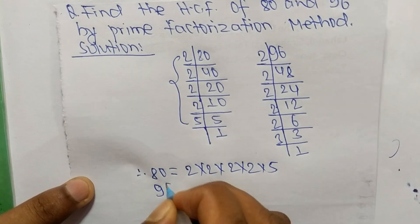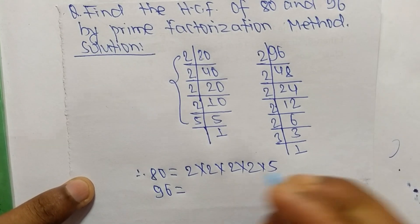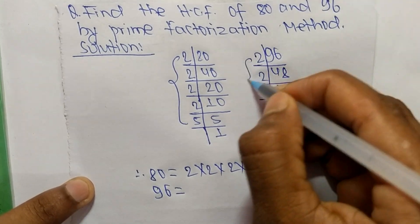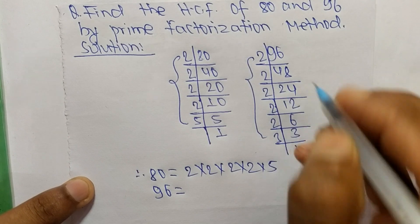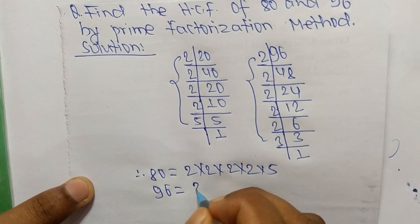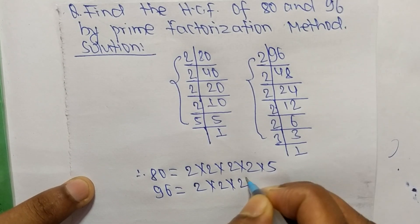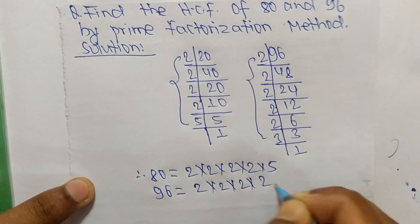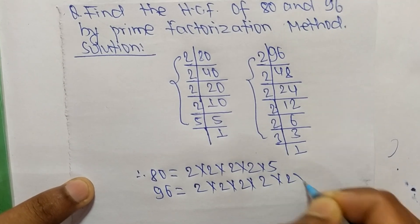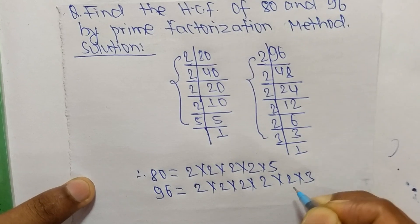And 96 is equal to 2 times 2 times 2 times 2 times 2 times 3.